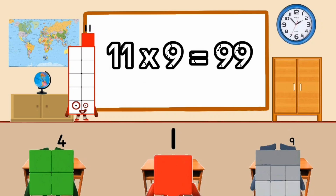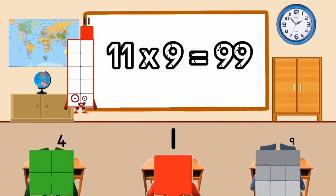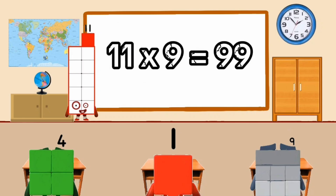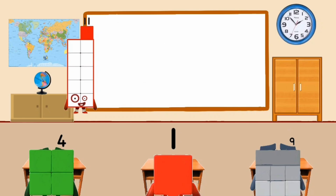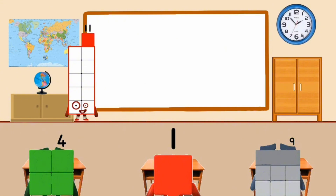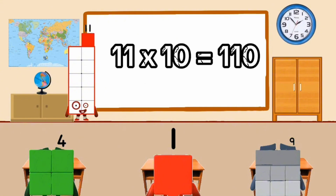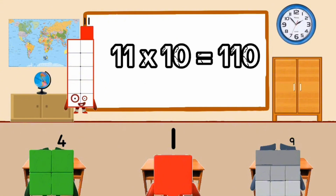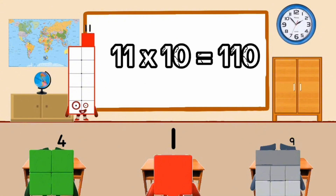11 times 9 equal 99. 11 times 10 equal 110.